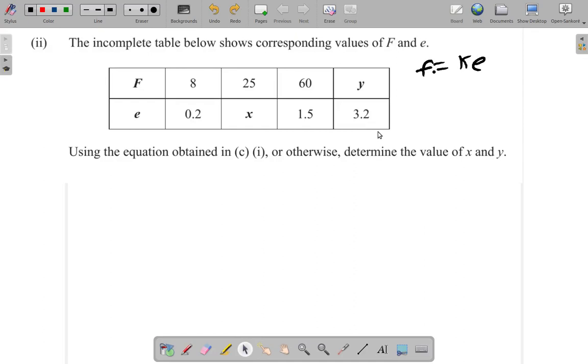Okay, part 2. This is a continuation from part 1 done earlier. That's why I had put the equation f equals ke here, because this is the equation that we obtained. The incomplete table below shows corresponding values of f and e. Using the equation obtained in C1, or otherwise, determine the value of x and y.